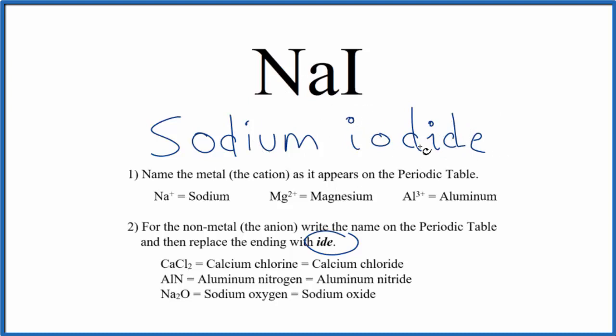If you are given the name sodium iodide and asked to find the formula, sodium has a 1 plus ionic charge and iodide has a 1 minus. So we need one sodium atom and one iodine atom for these charges to balance out.